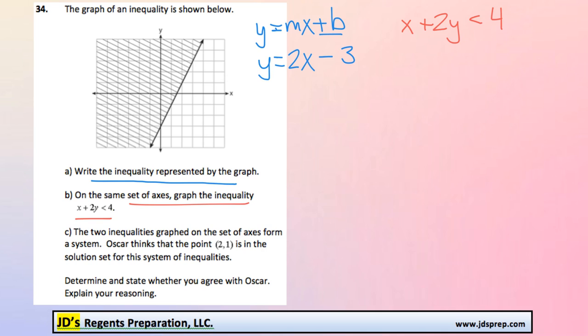So we'll subtract an x from both sides, and then we'll get 2y is less than negative x plus 4. And then we divide everything by 2, and we would get that y is less than negative 1 half x plus 2.